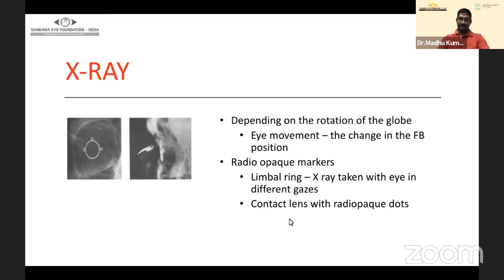For X-ray localization, you can ask the radiologist to take images in straight gaze, up gaze, and down gaze. Considering the center point of the mid-vitreous cavity as reference, movement of the eye and the respective movement of the foreign body gives a rough idea — if it moves with the gaze it is anterior; if it moves against the gaze it is posterior, on the retina.